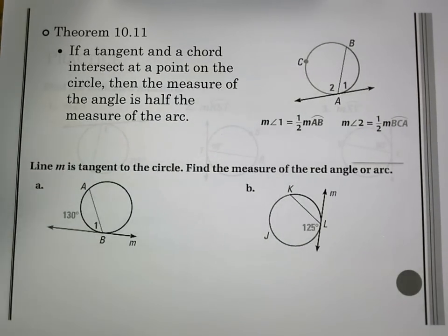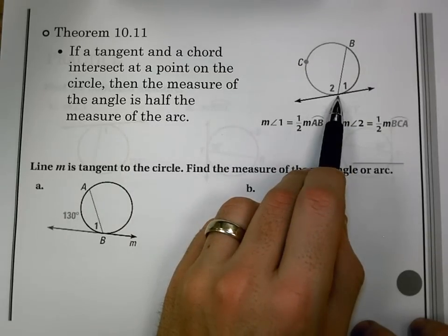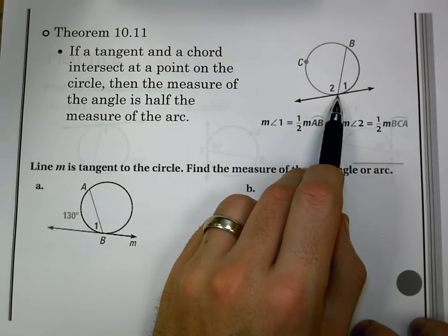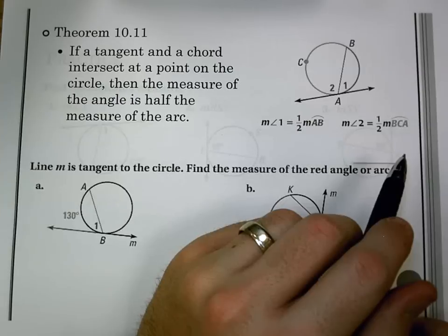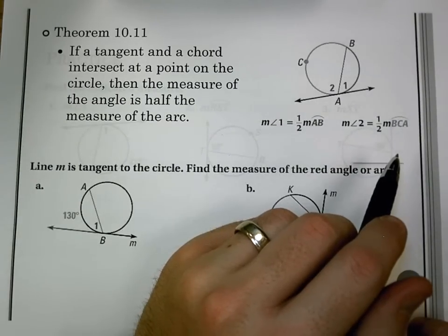The first one we have is theorem 10.11, which says if a tangent and a chord intersect at a point on the circle, then the measure of the angle is half the measure of the arc. We've talked about inscribed angles in section 10.4, and this is going to follow the same idea.